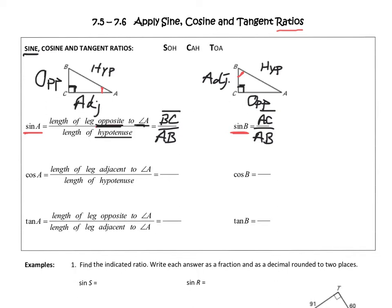Which brings us to our next ratio, cosine. So I'm still focused on angle A — this is the cosine of angle A. The first part of my ratio is going to be the leg adjacent to angle A, which we already labeled as side AC. And the second part of my ratio, or the denominator, is the hypotenuse, which is still AB.